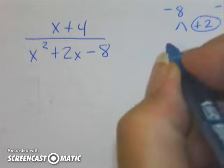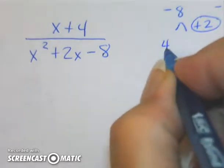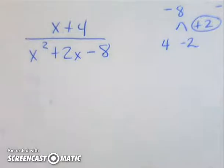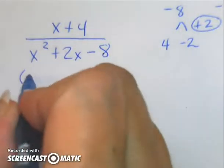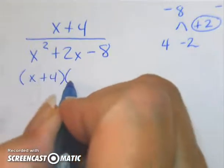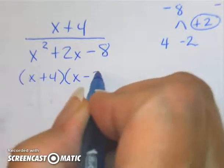I do believe that would be a positive 4 and a negative 2. This trinomial factors to x plus 4 and x minus 2.